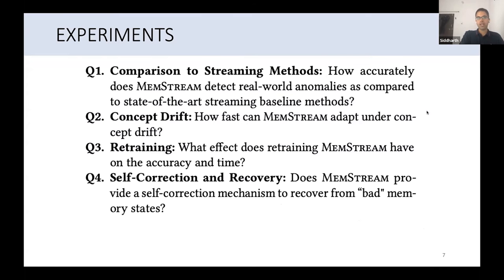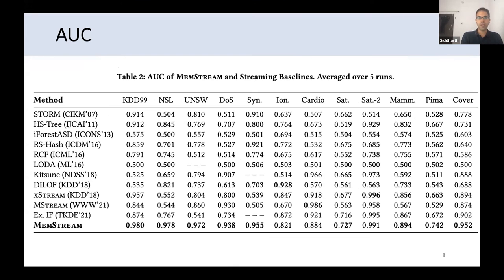In the experiments we compared and answered these four questions. How accurate is MemStream detecting the anomalies compared to all the previous streaming baseline methods and how fast it can detect concept drifts. Our focus was also whether it can do it in a fast manner and whether we can retrain it and what happens when you actually retrain it. Usually your models once they're performing you don't have an option to retrain it but we give that opportunity here. If at all there's some kind of memory poisoning how do we recover from it? Can we do a self-correction mechanism or not? I'll discuss these experiments.